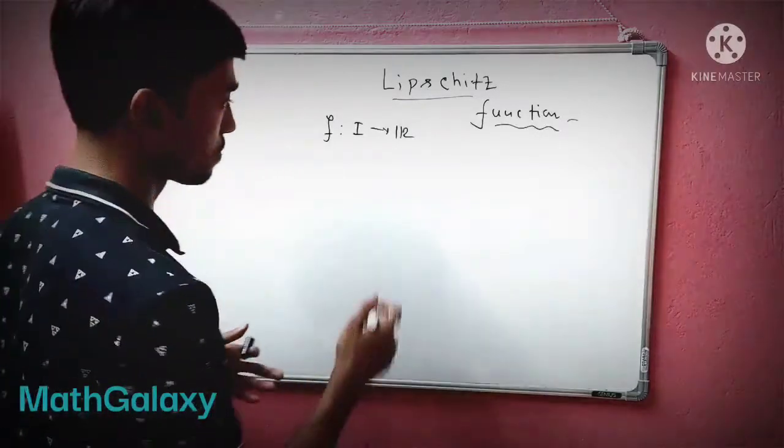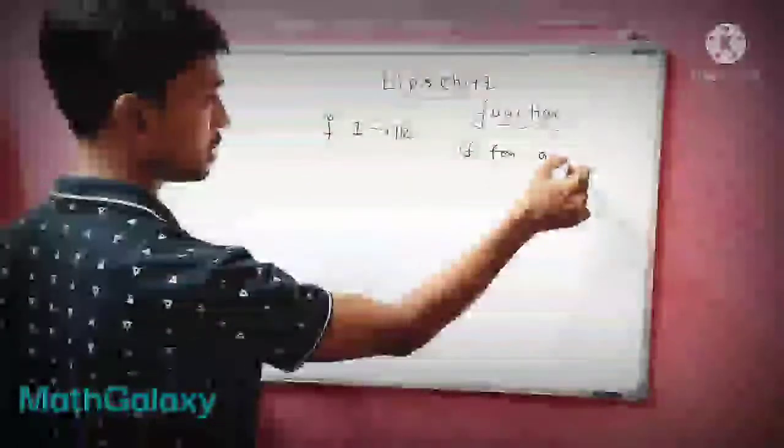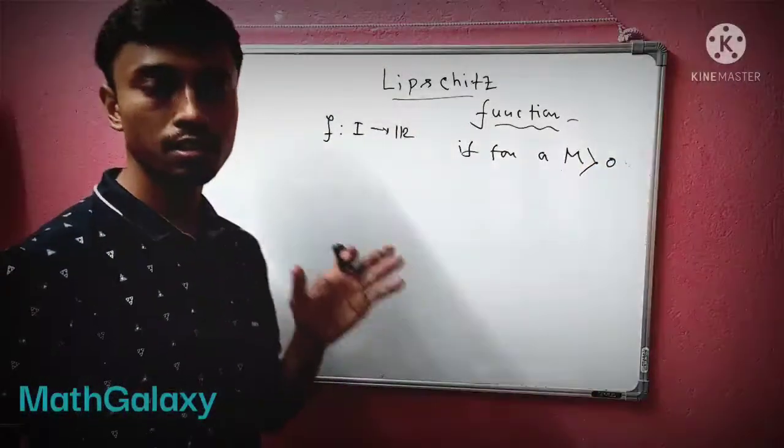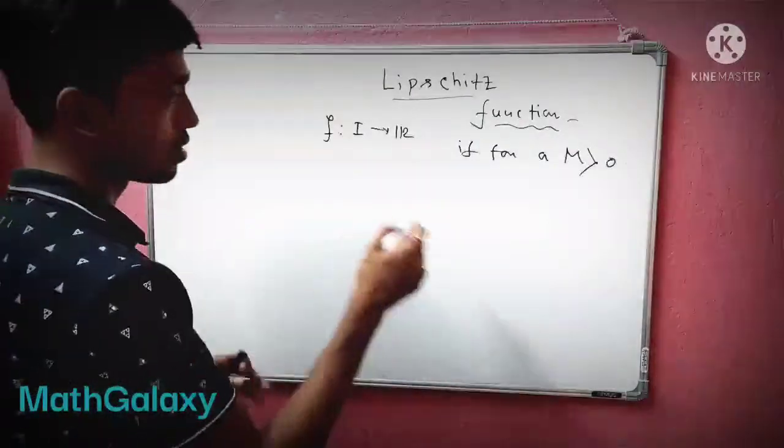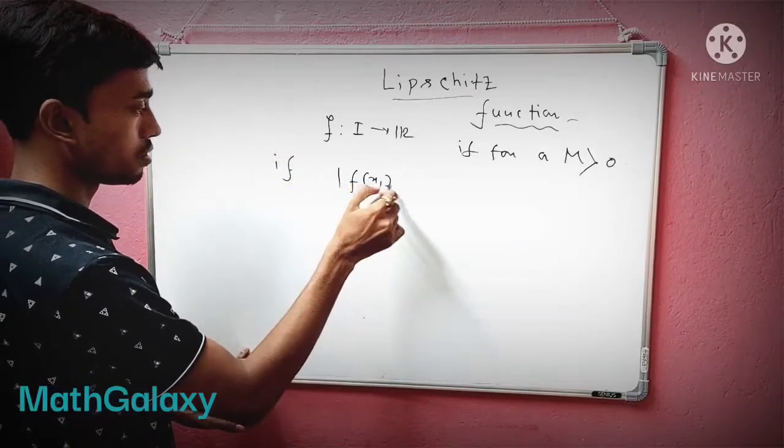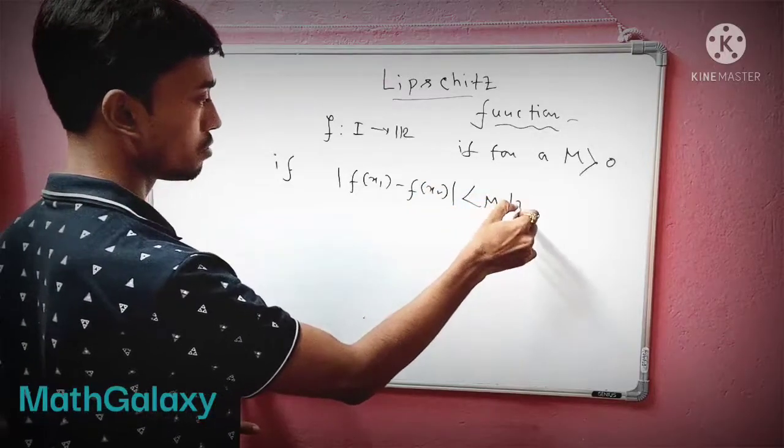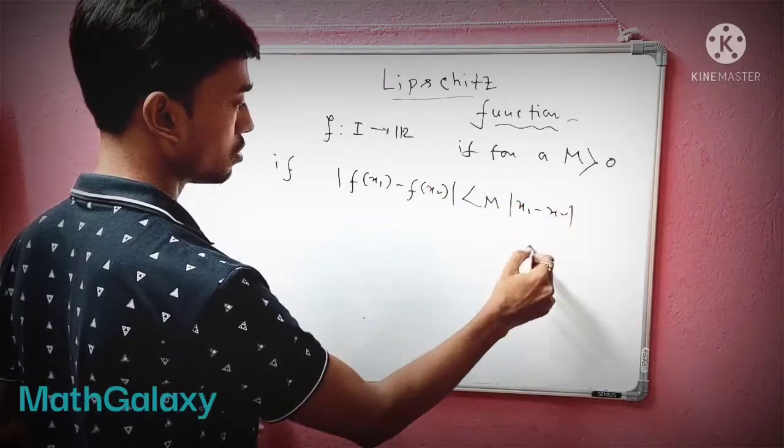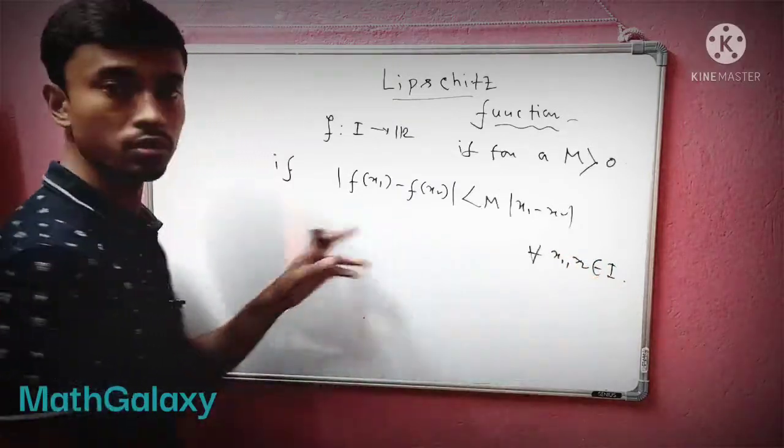So if for a m greater than 0 - m is basically a positive number, it doesn't matter whether it is very big or very small - if |f(x1) - f(x2)| < m × |x1 - x2| for all x1, x2 belongs to I. So this is basically the basic condition.